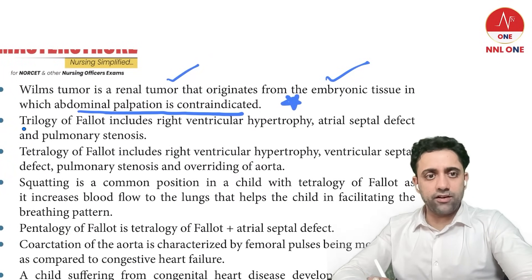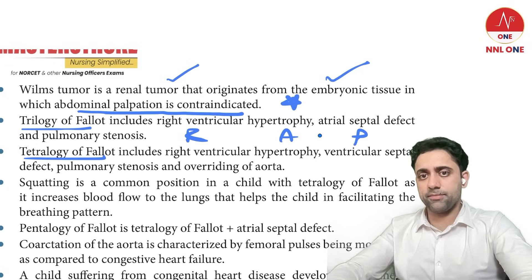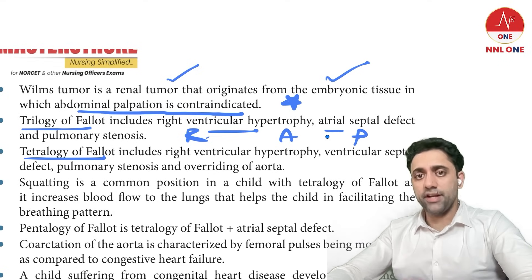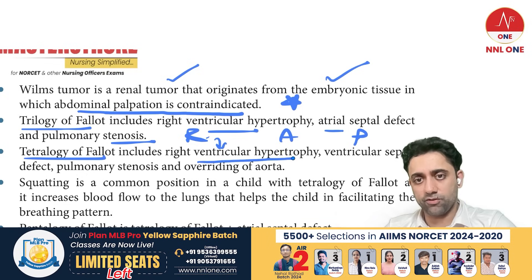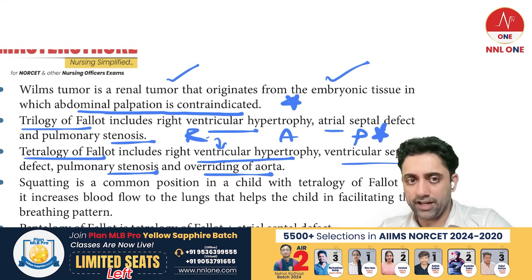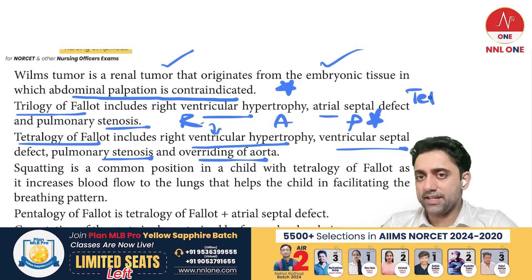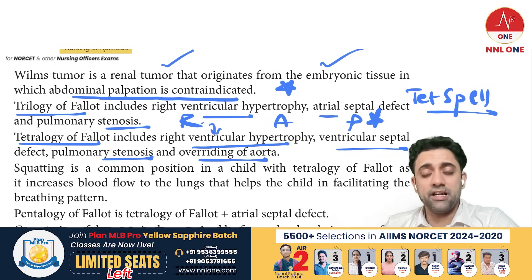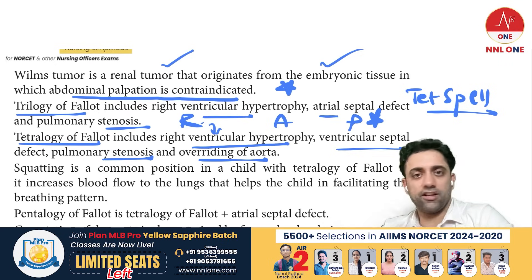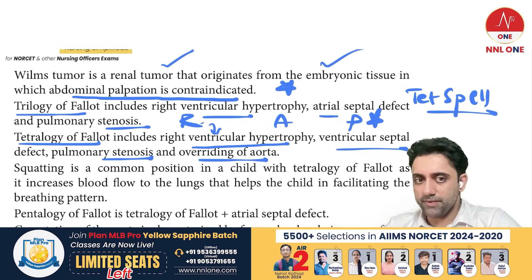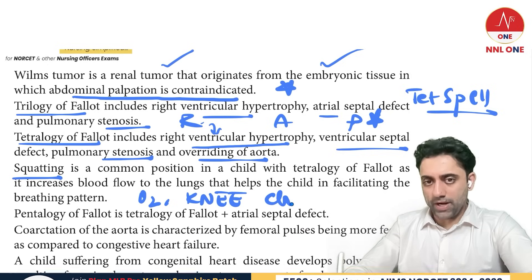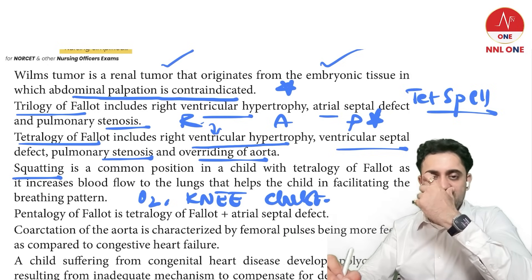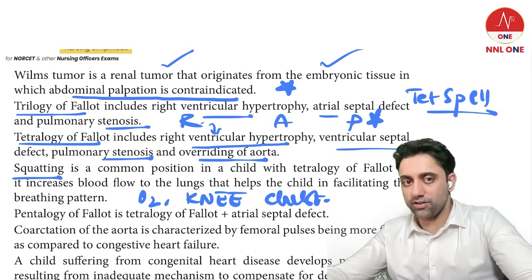Trilogy of Fallot mnemonic: RAP — R for right ventricular hypertrophy, A for atrial septal defect, P for pulmonary stenosis. Tetralogy of Fallot includes right ventricular hypertrophy, pulmonary stenosis, ventricular septal defect, and overriding of the aorta. In tetralogy of Fallot, a 'tet spell' occurs when the baby cries and becomes cyanotic. Treatment includes squatting, oxygen, and knee-chest position.